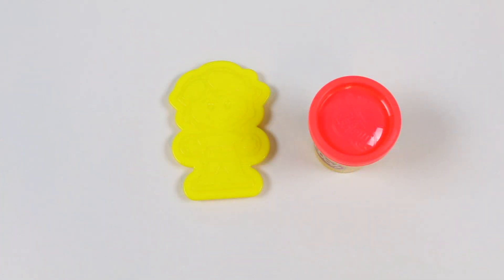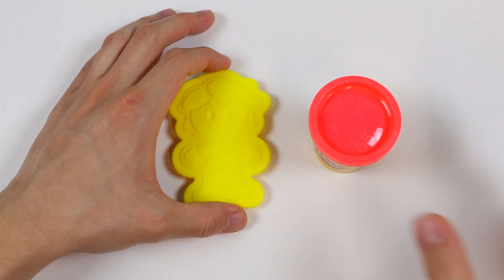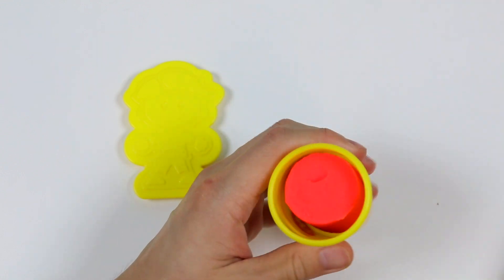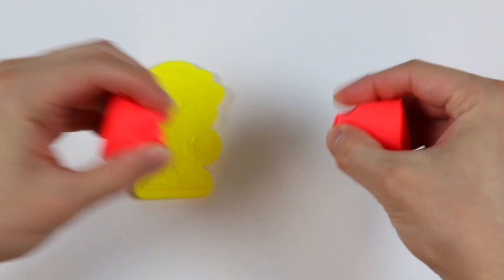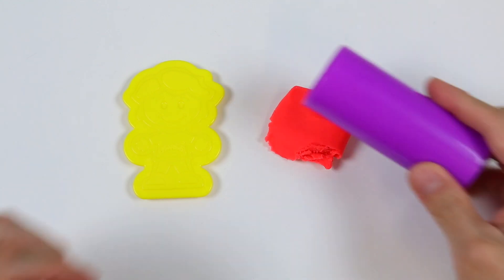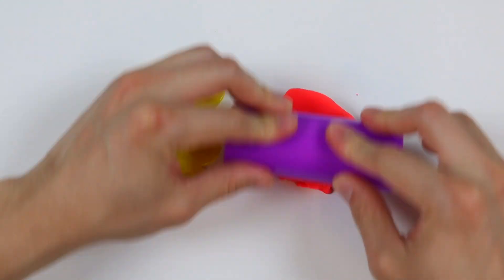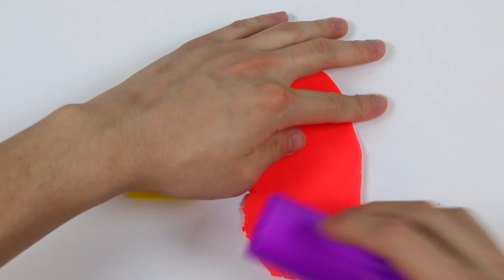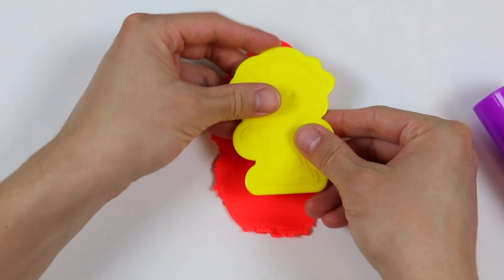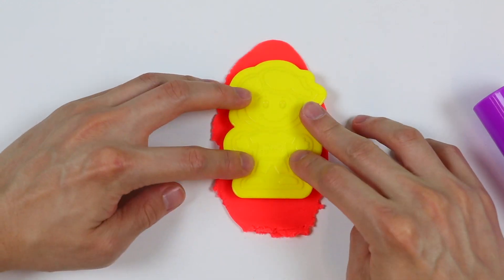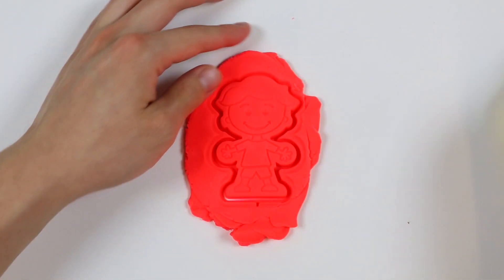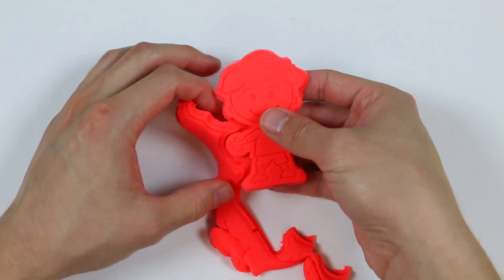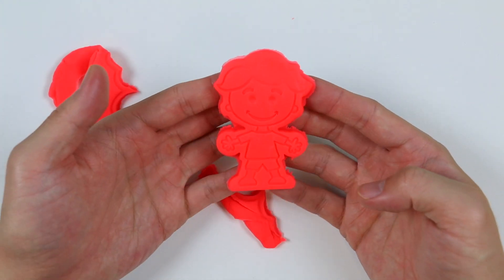This will require some creative thinking. Let's put our thinking caps on and get creative. Let's start by making a character. I'll make this boy using red play-doh. Roll it out, stamp it. And here's our first character. We'll name him in a bit.